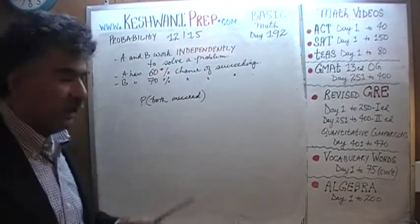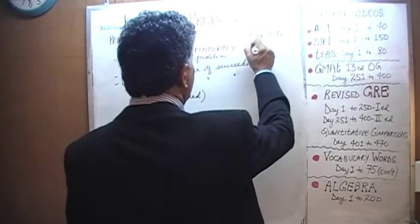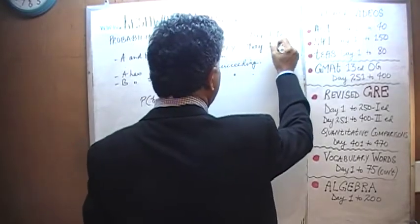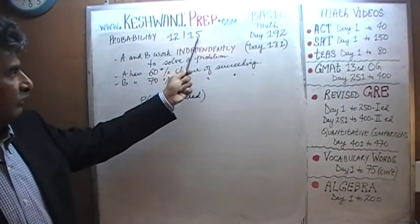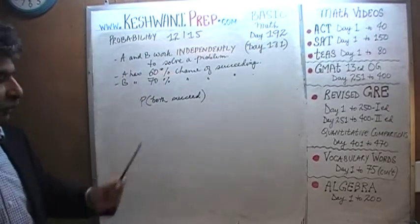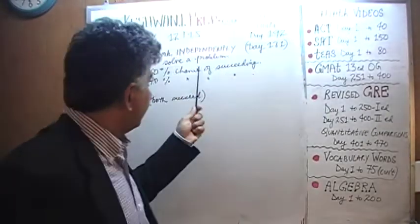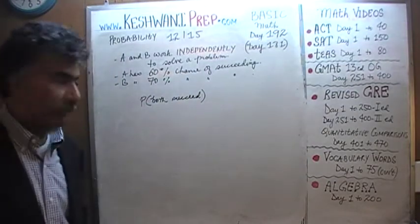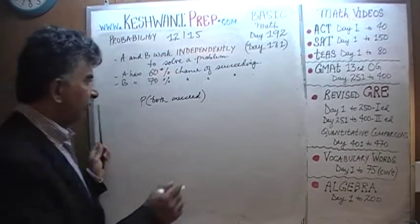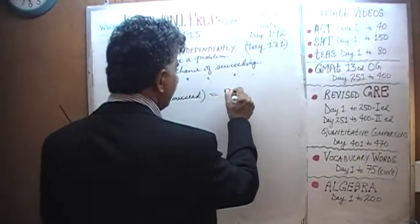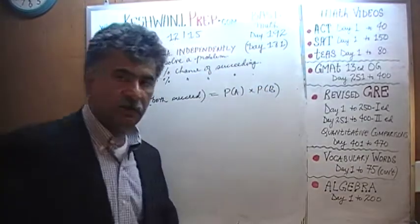Now we know from lesson number 181 — the very first lesson in our series of 15 on the topic of probability — that if two events are independent, which they are here since we are told they are working independently, then the odds of both of them happening is simply the product of their individual odds.